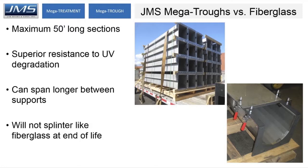Stainless steel and aluminum have superior resistance to UV degradation. They can span nearly any distance between supports with an appropriate shell thickness and external stiffener configuration, whereas fiberglass may have trouble with that. Additionally, stainless steel and aluminum will not splinter or damage other equipment the way fiberglass may at end of life.